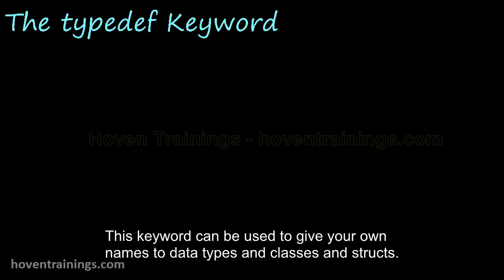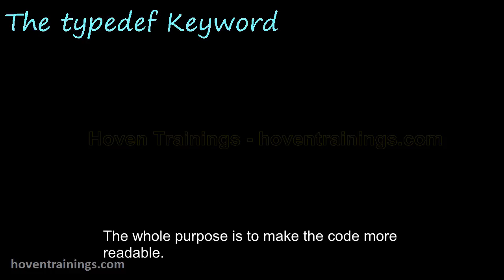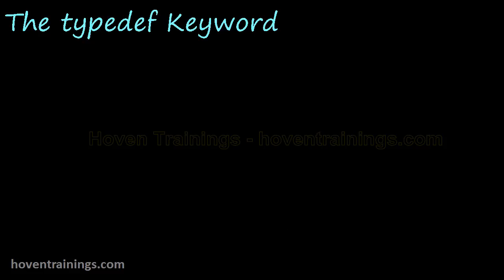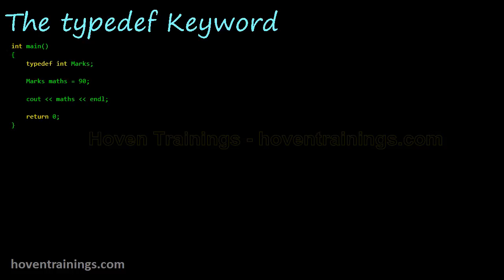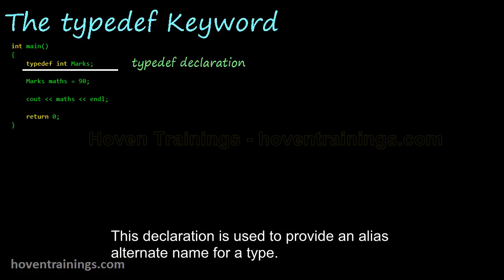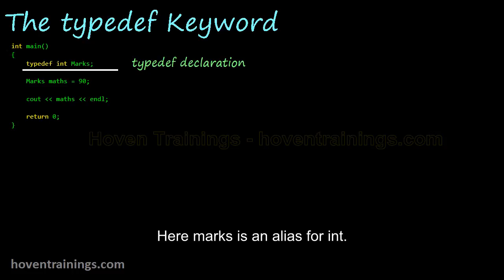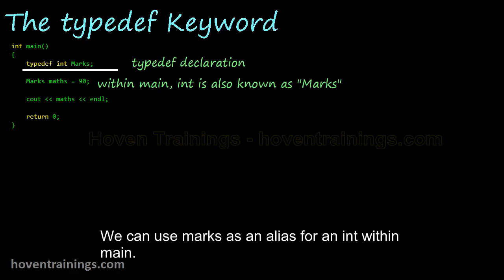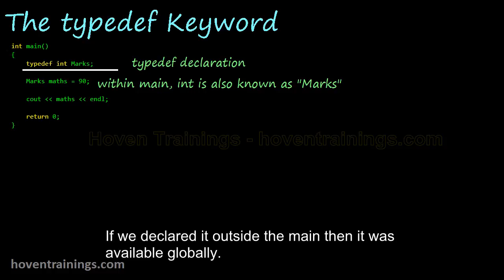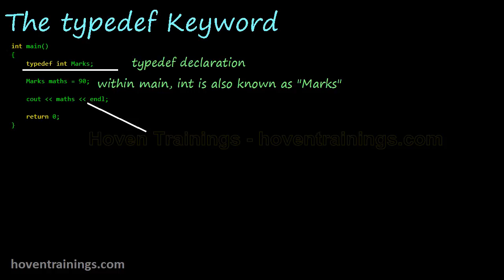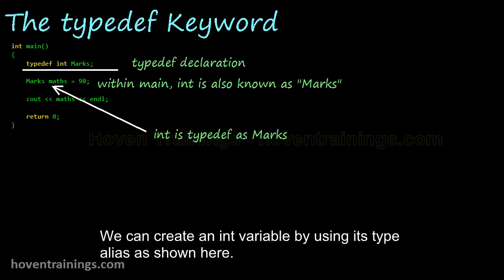The typedef keyword can be used to give your own names to data types, classes, and structs. The whole purpose is to make the code more readable. This declaration provides an alias or alternate name for a type — here, 'marks' is an alias for int. We can use marks as an alias for int within main, and the type definition is scoped to the main function. If declared outside main, it would be available globally.